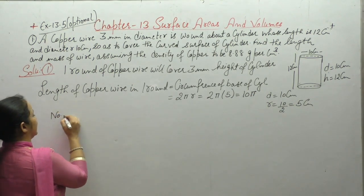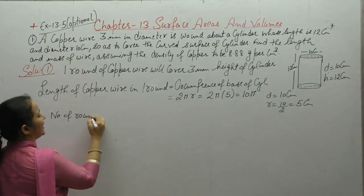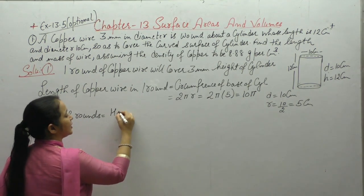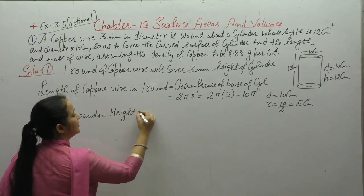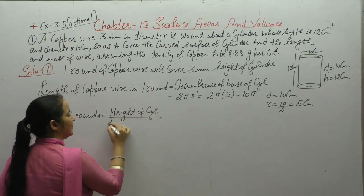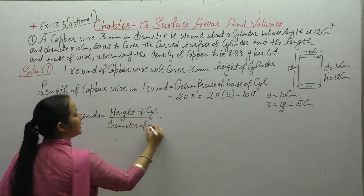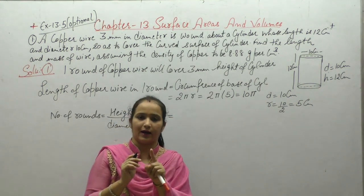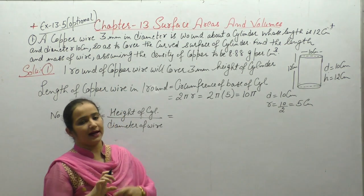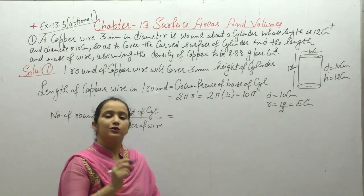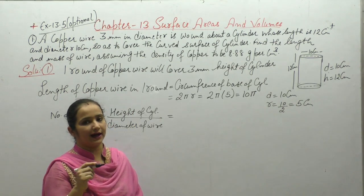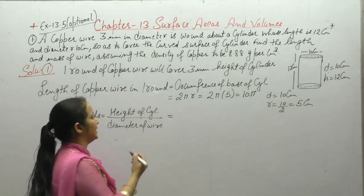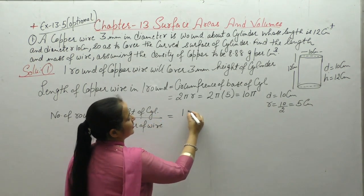Now number of rounds - how many rounds of wire will there be to cover the cylinder? That is height of cylinder upon diameter of wire. As much as the diameter is, that much one round will cover. So if we divide the total height by its diameter, we get how many rounds of wire. The cylinder that we have wound - how many rounds? Height of cylinder is 12cm.